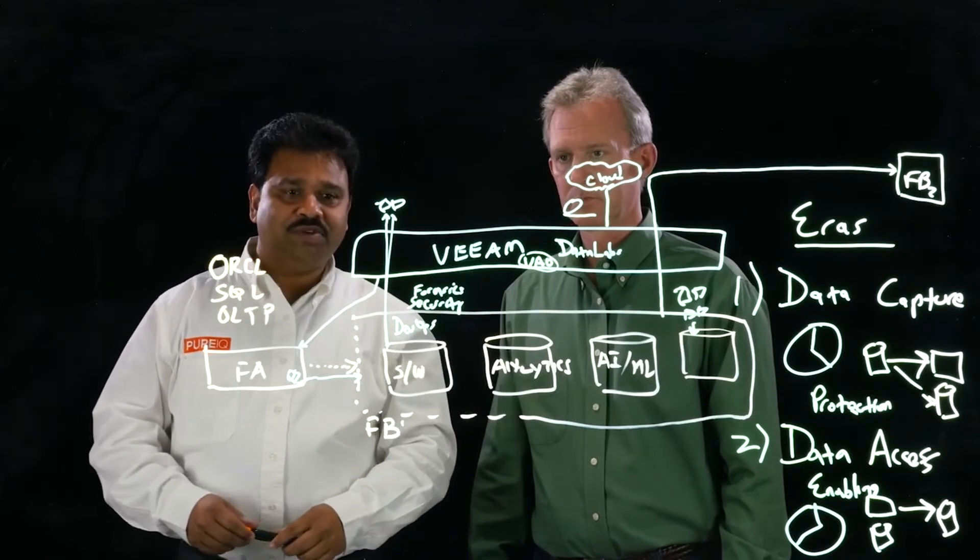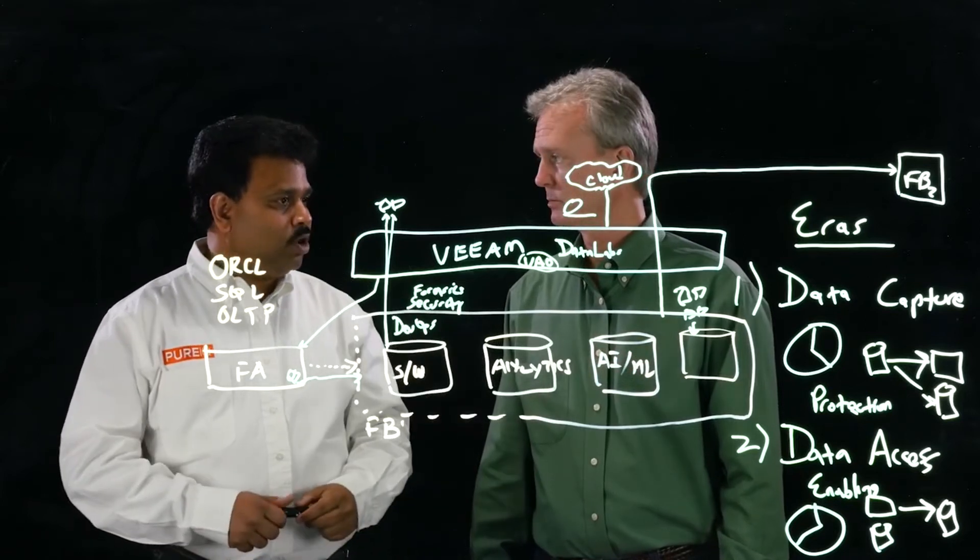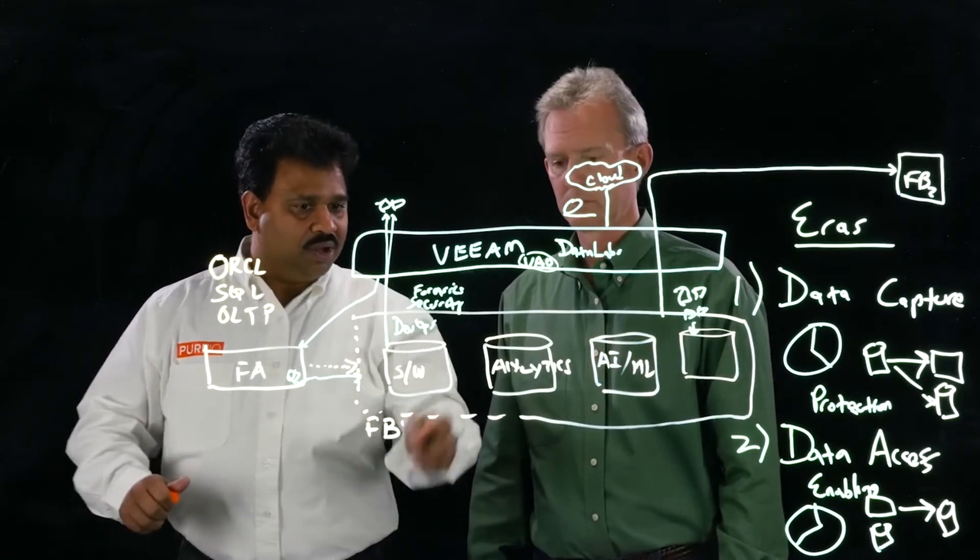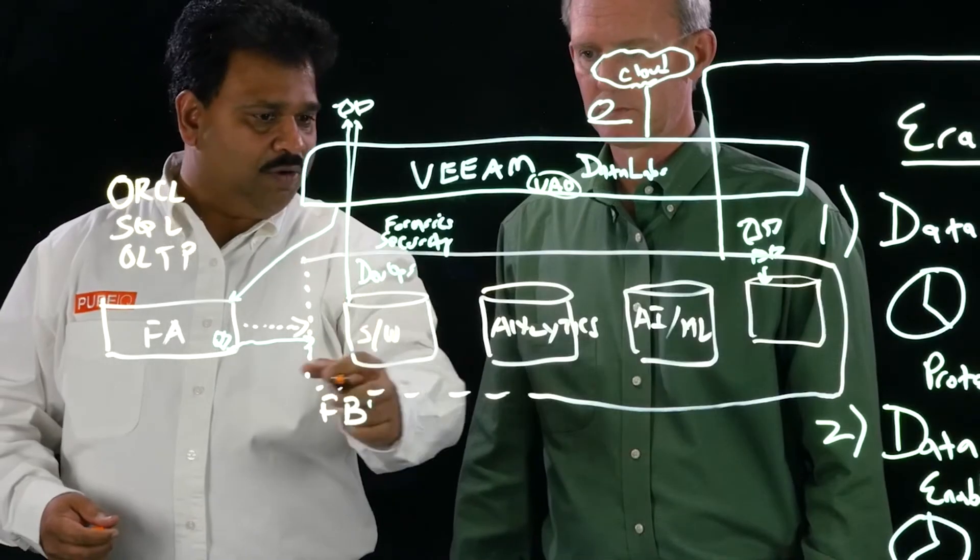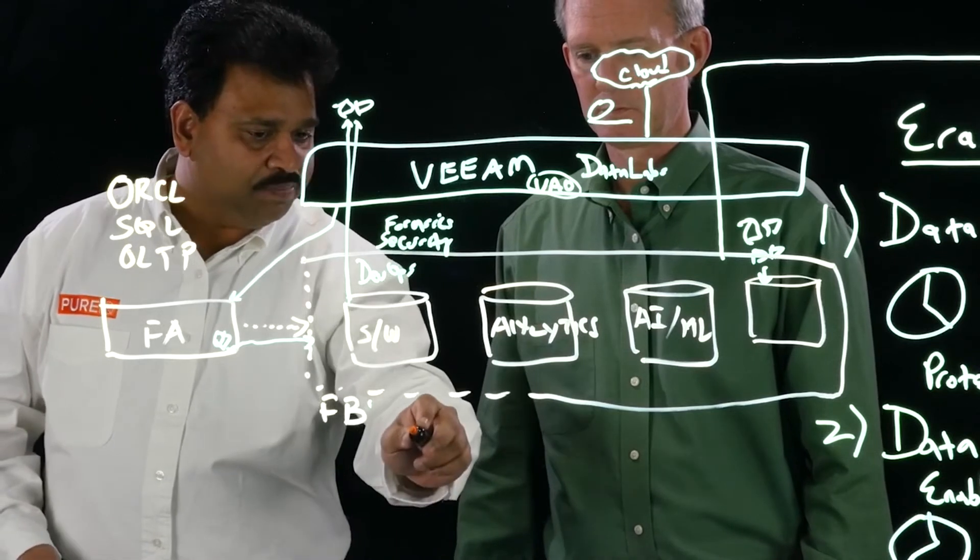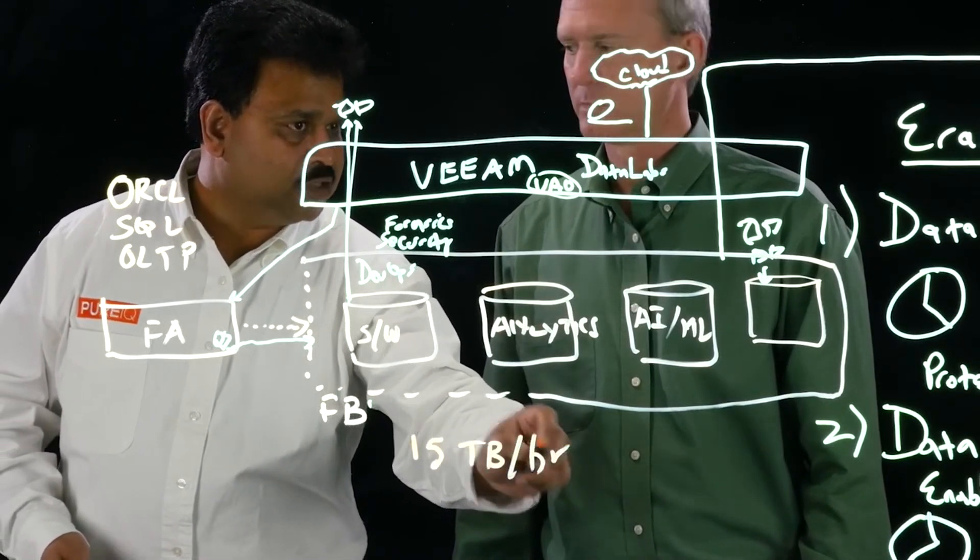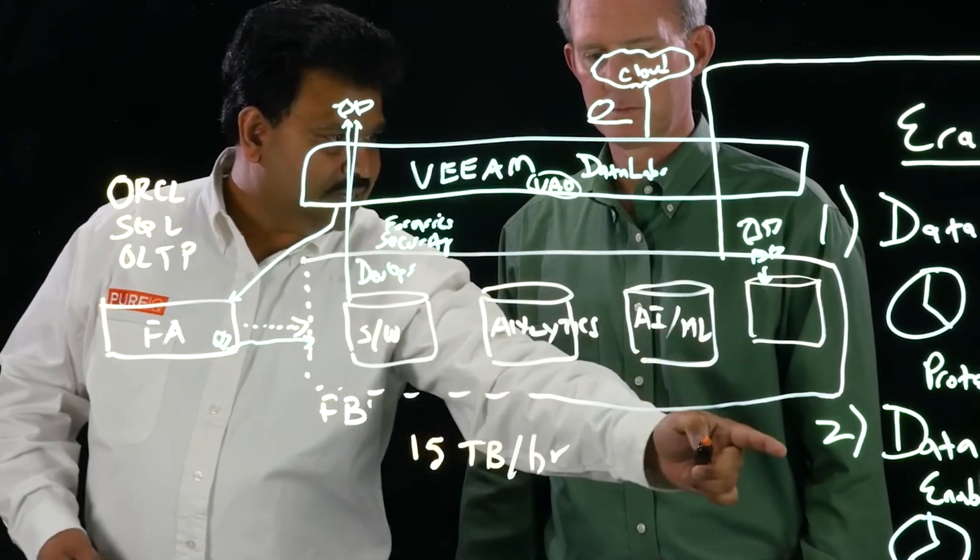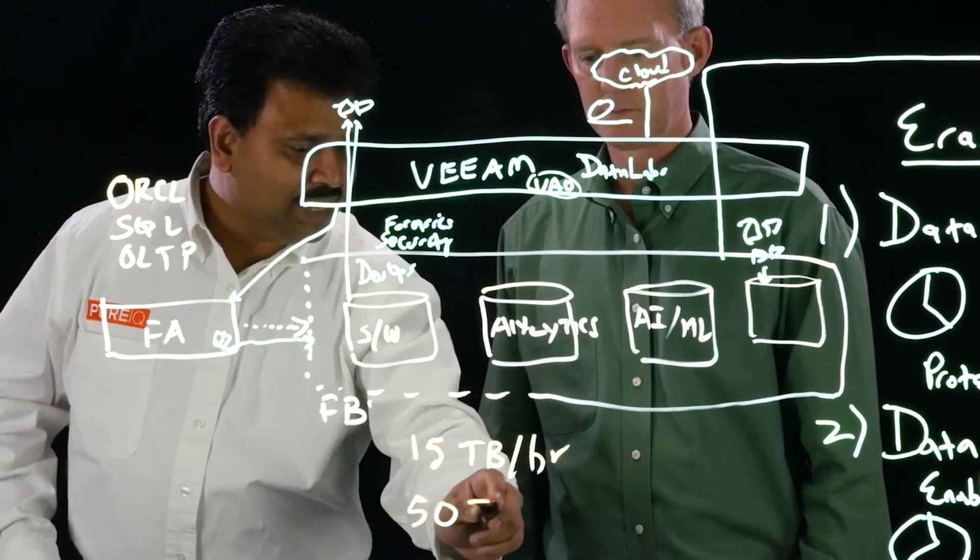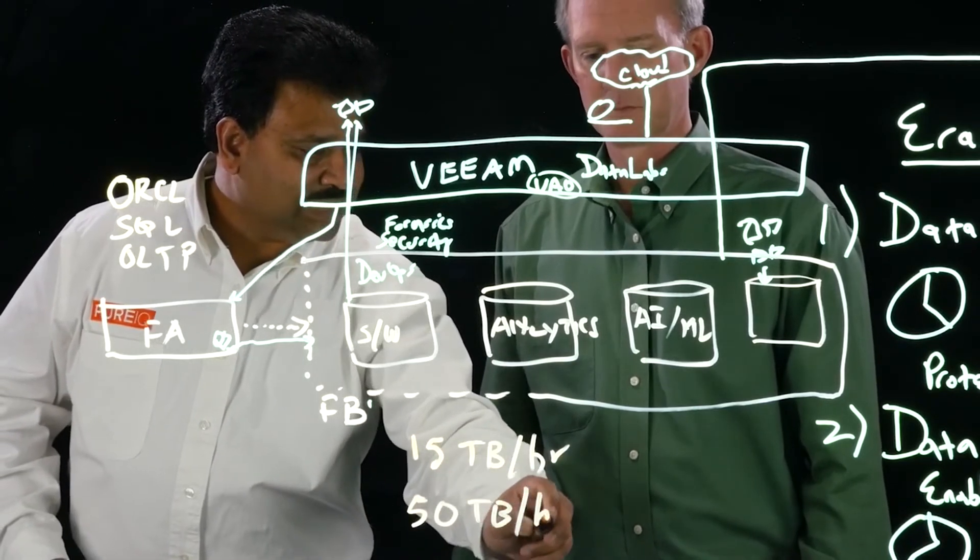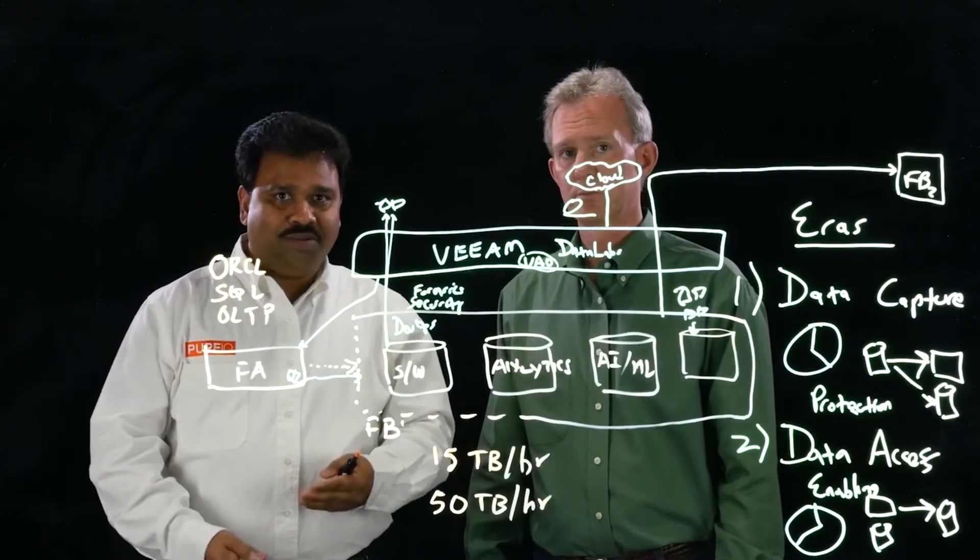But naturally, the question would be FlashBlade, if it is consolidating so many workloads, does it really have all the performance you need? Just to give you some numbers, on the backup world, as people understand terabytes per hour, a single 4U form factor FlashBlade can actually back data at 15 terabytes per hour. And it linearly scales with more and more blades. More than that, to support your data access requirements of the modern era, you can actually do almost like three and a half times the restore. This is the key for our, actually, use case here, which is why we call it Rapid Restore, right?